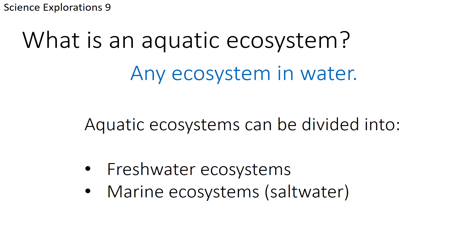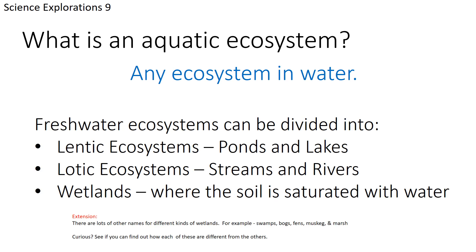An aquatic ecosystem is any ecosystem in water. We can divide them into two categories: a freshwater ecosystem and a marine ecosystem, separated based on the amount of salt in the water. In Ontario, we mostly have freshwater ecosystems. You'd need to go very far north to Moosonee and James Bay to find a marine or saltwater ecosystem. We're going to focus mostly on freshwater ecosystems.